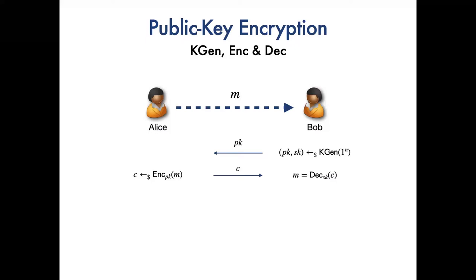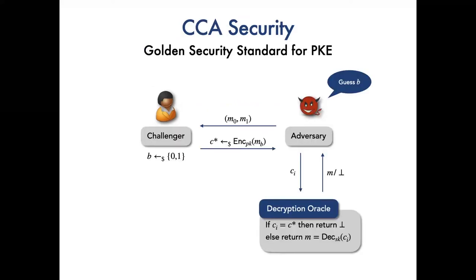Then Alice encrypts M under the pk and sends the ciphertext C to Bob. Finally, Bob can use the secret key sk to decrypt the ciphertext and obtain the message M. CCA security has been widely considered as a golden security standard for public key encryption, PKE.